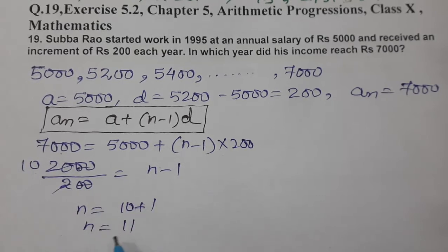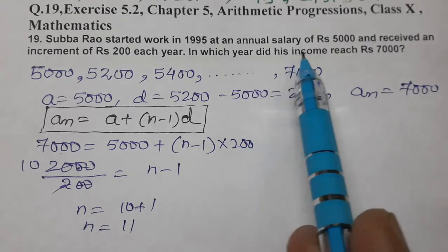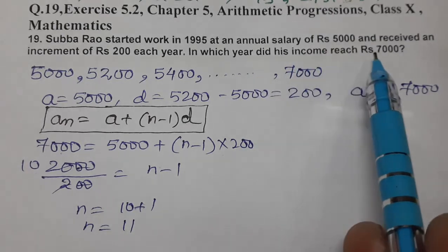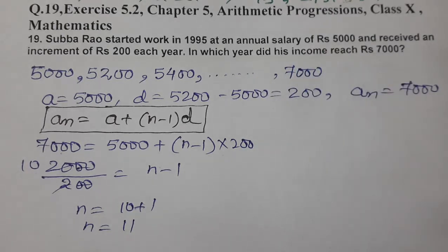So, 11th year mein income kitni ho chalayegi? Rs. 7,000. In which year did income reach 7,000? In the 11th year.